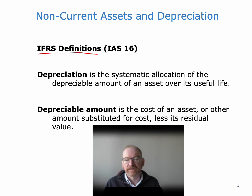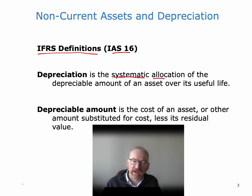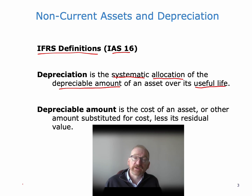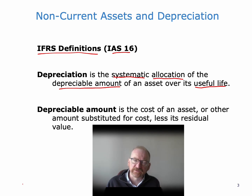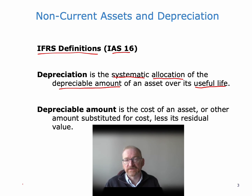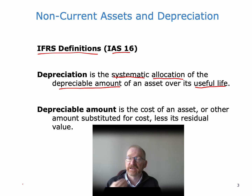The IFRS definition of depreciation comes from IAS 16, and it says that depreciation is the systematic allocation of the depreciable amount — which is usually the cost more or less — of an asset over its useful life. So what we're trying to do is spread the cost of an asset over a time period, which is its useful life. Depreciation is not trying to value an asset at each individual point in time; it's just trying to allocate the cost to time periods. Depreciation is about allocation of cost — it is not about valuing an asset at a particular point in time.